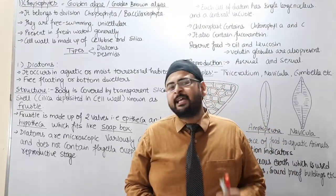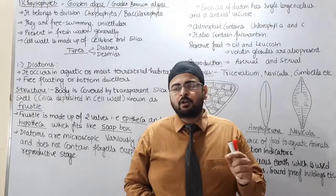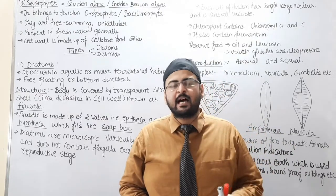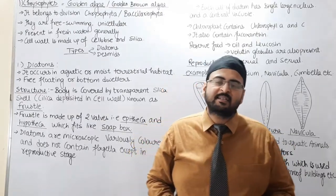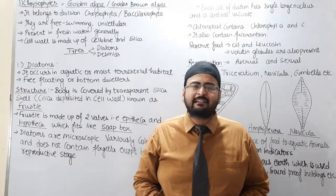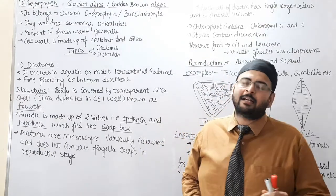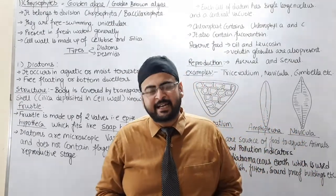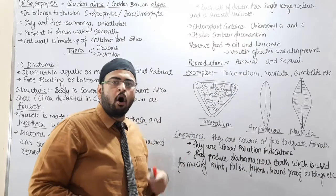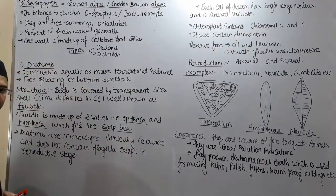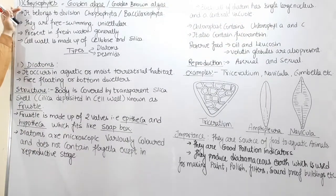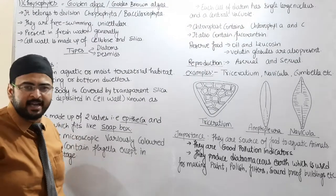Today we are going to start a very important topic for your NEET exam and also for the school exam — that is Chrysophytes. In our previous lecture, we started the second kingdom, Kingdom Protista, and I also told you that there are five types of Protista. Today we are going to start the first category of Protista, that is Chrysophytes, also called Golden Algae or Golden Brown Algae. Chrysophytes is the first category of Kingdom Protista according to your NCERT.